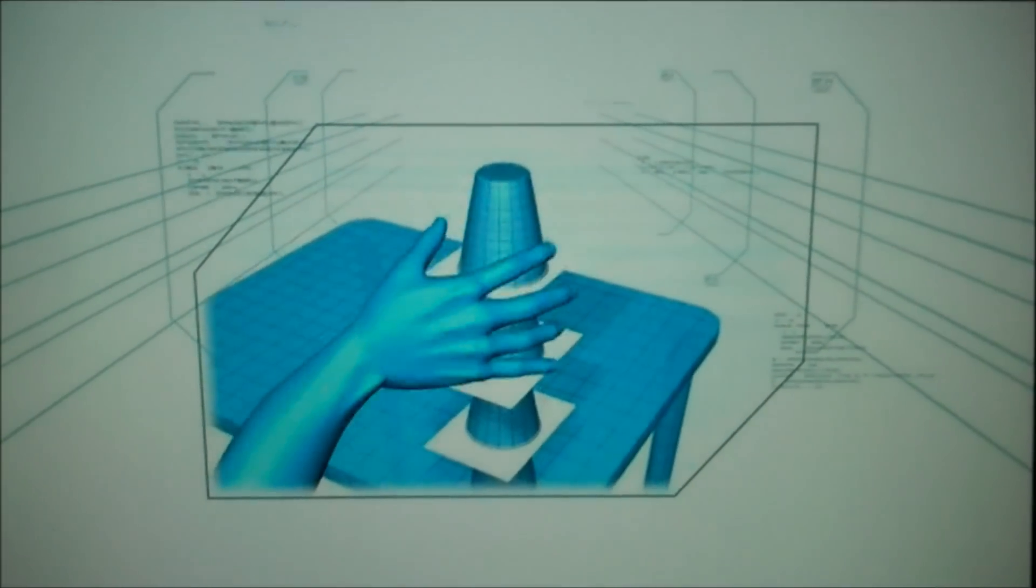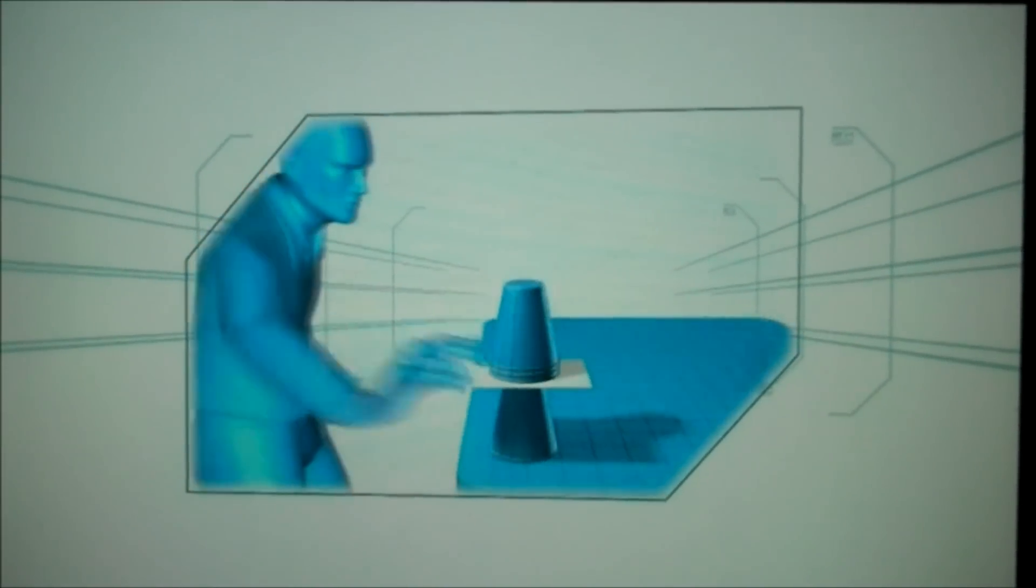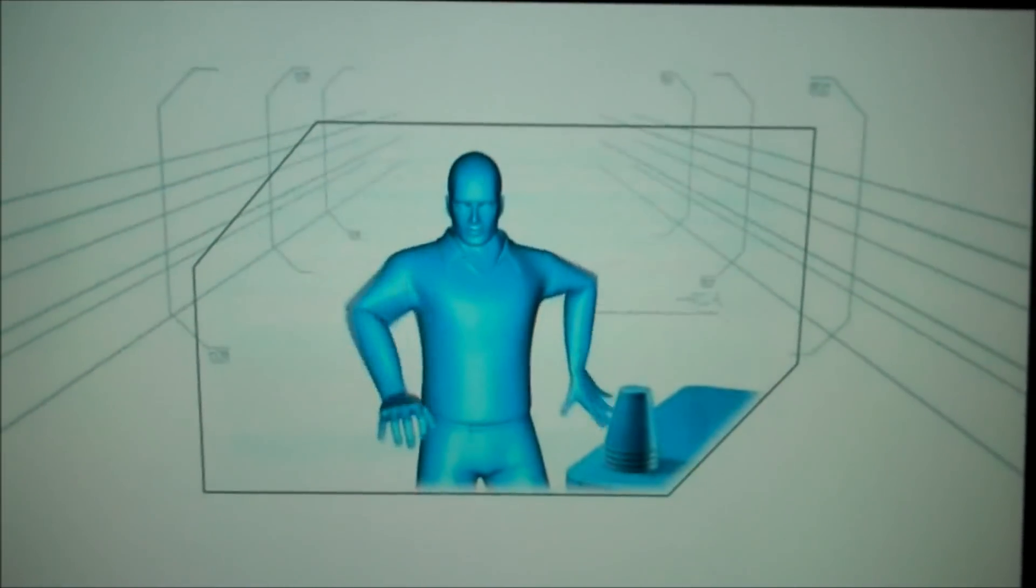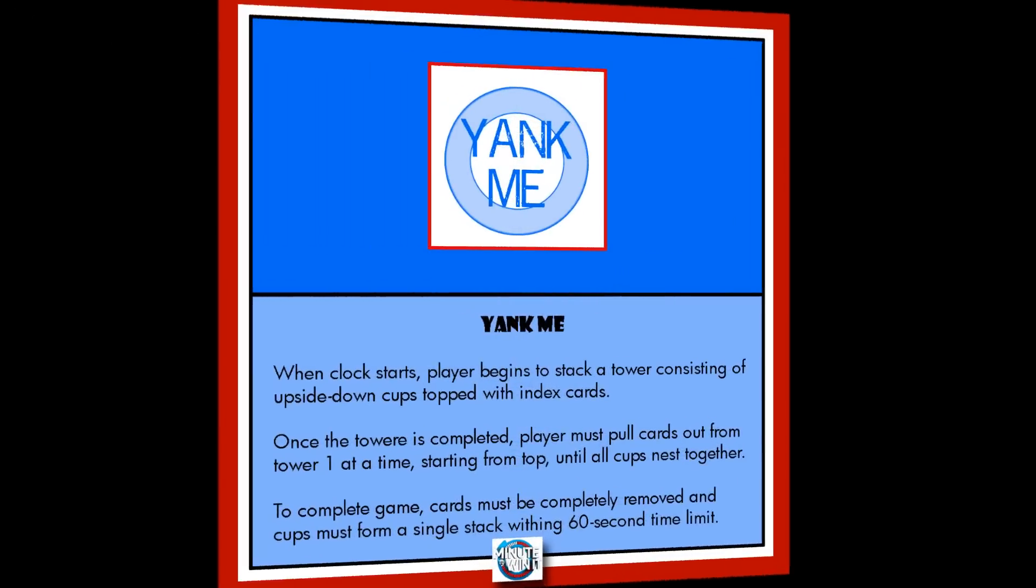The contestant must place index cards between four plastic cups to form a tower, then yank the cards out, causing the cups to collapse into a stack. Presto! Failure to complete this task in 60 seconds may result in elimination.